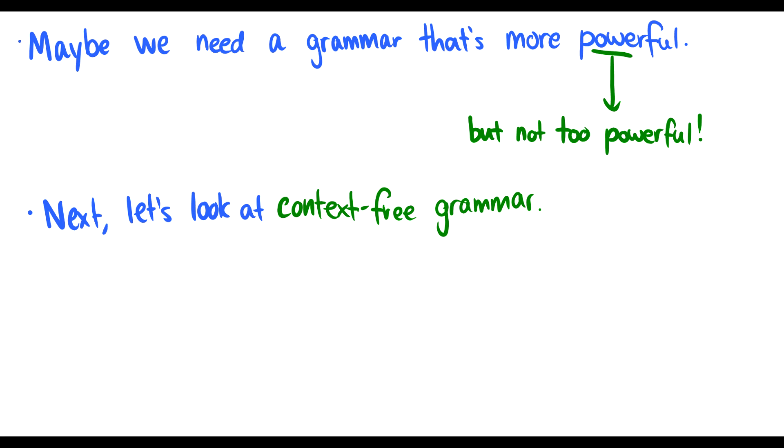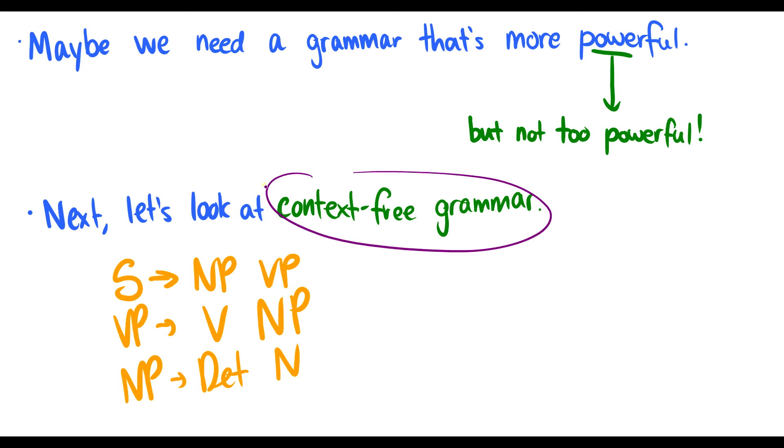You may remember some rules like this: S goes to NP VP, VP goes to V and NP, maybe NP goes to a determiner and then a noun. These are the rules that context-free grammar can generate. Is this going to be good enough? We'll take a look and see what happens. If you have any questions, leave them in the comments below.